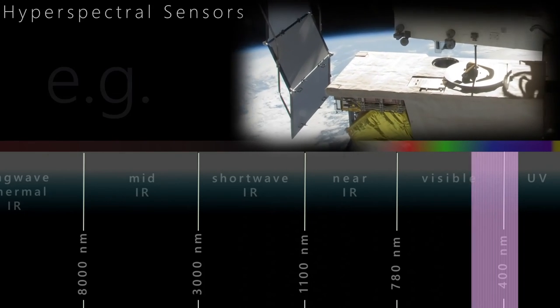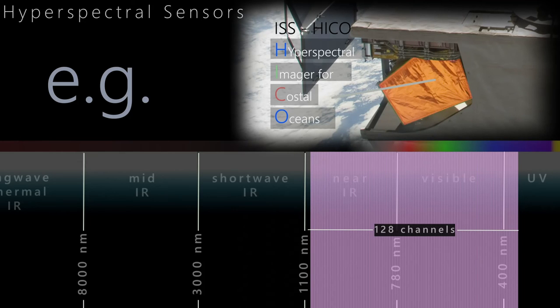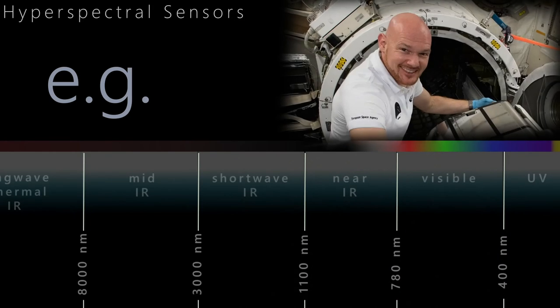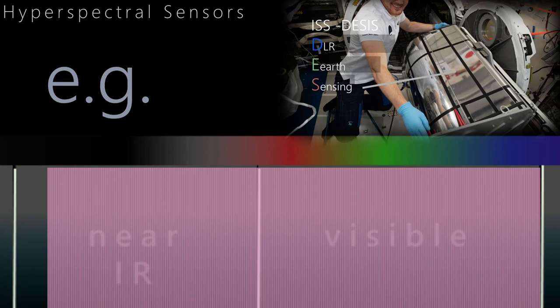Hyperspectral sensors have several hundred channels and thus a very high spectral resolution. They continuously cover a much larger range of the electromagnetic spectrum, but to get this technology into space is complicated. Therefore, sensor systems such as the ISS DESIS, which observes the Earth in 240 channels in the visible and near-infrared range, are still pioneers in this field.